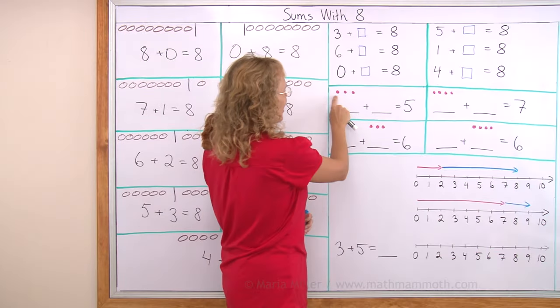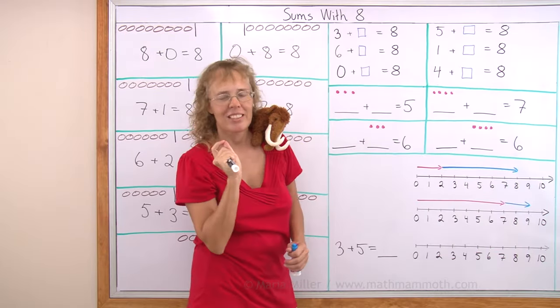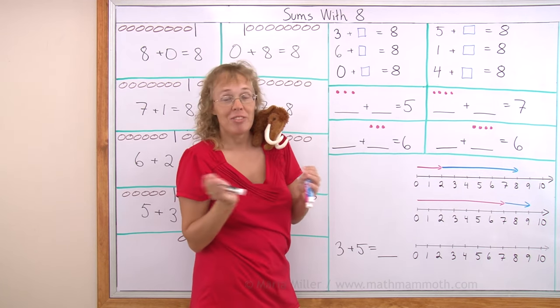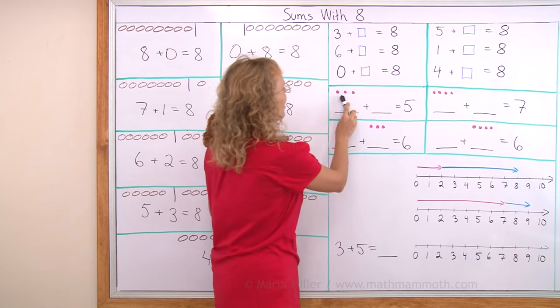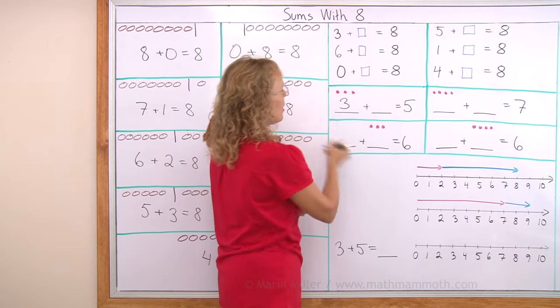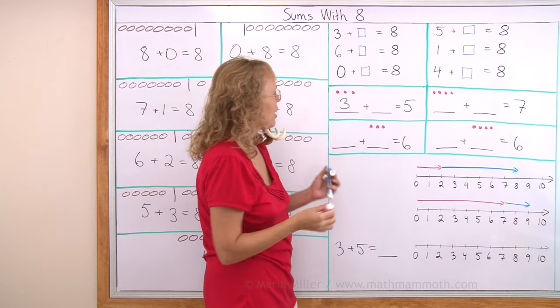Now, here I have 3 little berries. Let's say they are lingonberries. Lingonberries grow in Finland where I'm from. 3 lingonberries plus how many more makes 5? I write 3 here. How many more lingonberries to make 5? Can you tell?